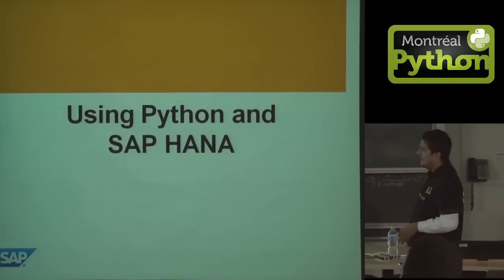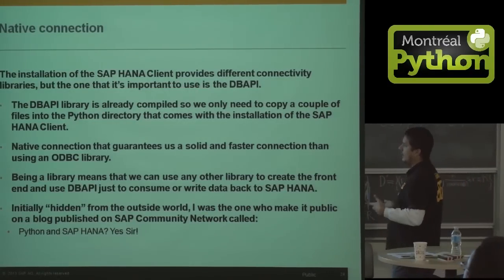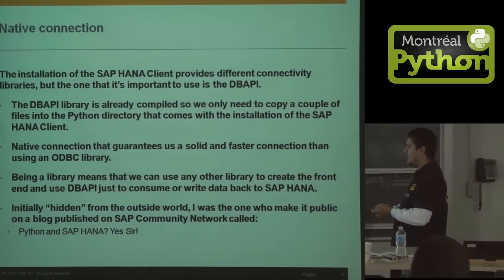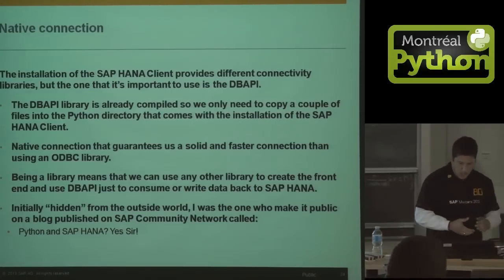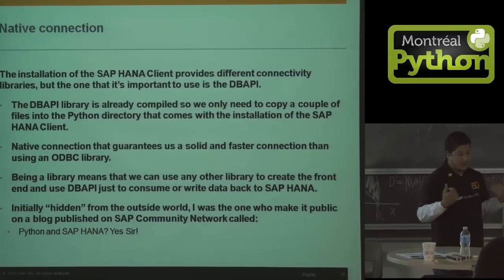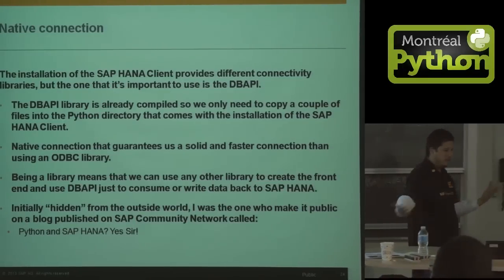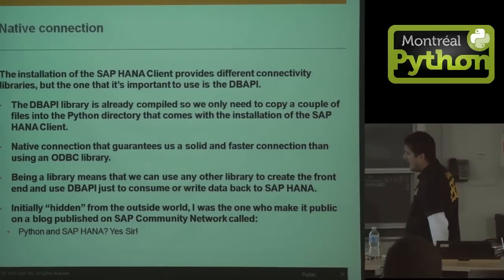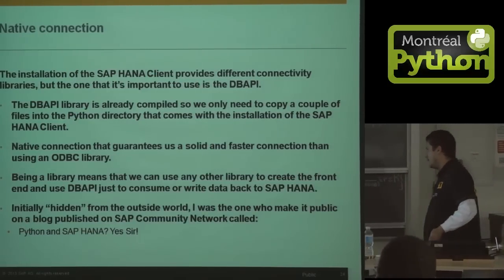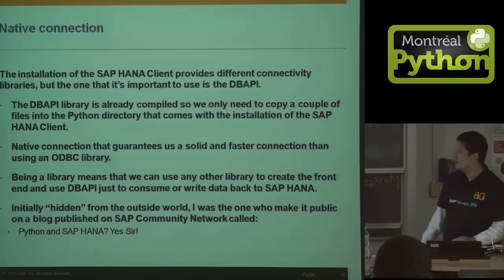Now comes the part where we use Python and SAP HANA. When you install the SAP HANA client, it provides a lot of drivers for connectivity, and there's one called dbapi — an already compiled library to make a native connection between Python and SAP HANA. Initially it was kind of hidden: you install it but don't really know it's there. I was the one who made it public on the SAP community by writing a blog post called 'Python and SAP HANA.' I wanted to show the SAP community that they can use Python together with SAP — even though I got some pushback saying it wasn't really for customers. But I really don't care, because Python is really cool and you can use it with SAP HANA.